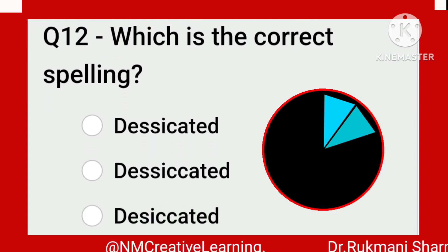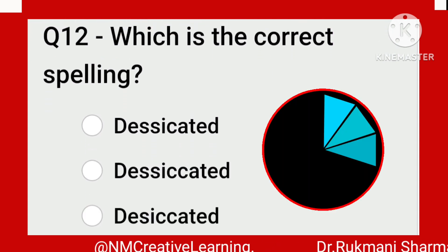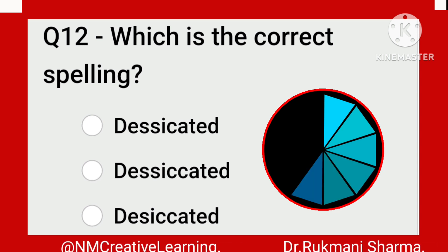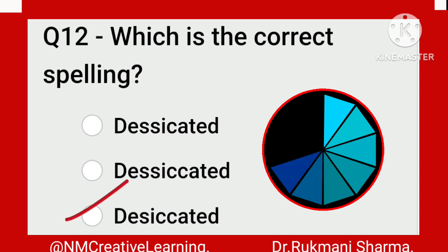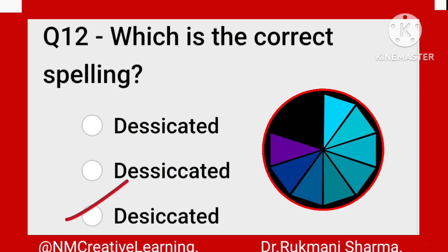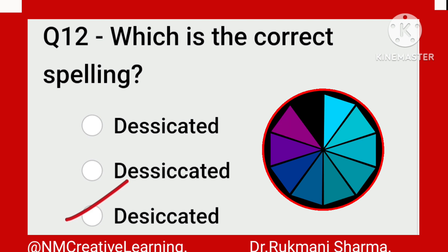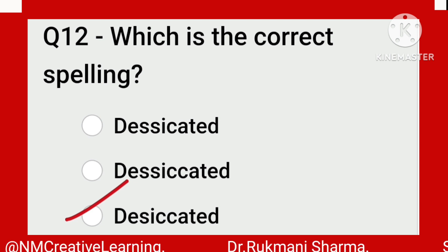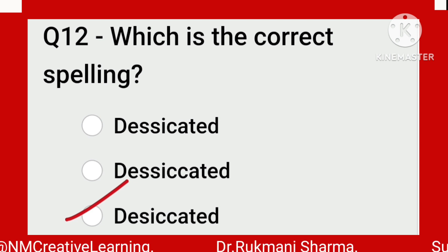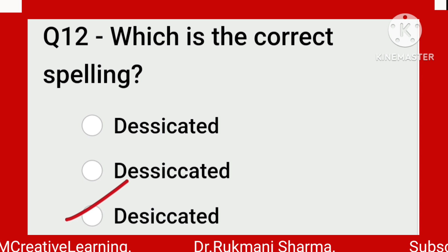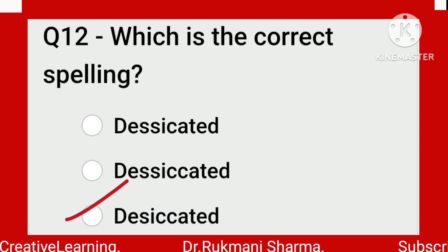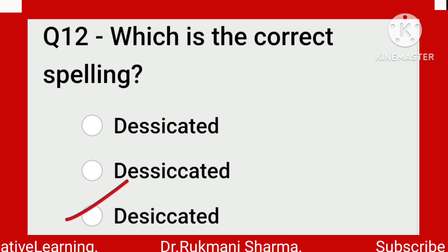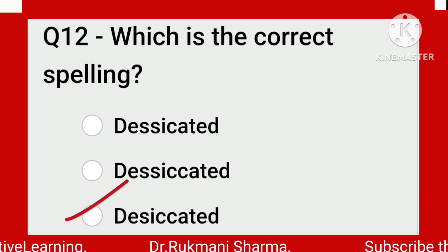Now, desiccated. This one — the spelling has a single S: D-E-S-I-C-C-A-T-E-D. Desiccated.